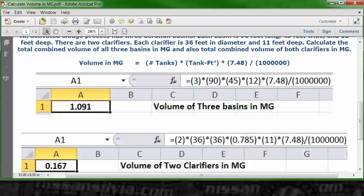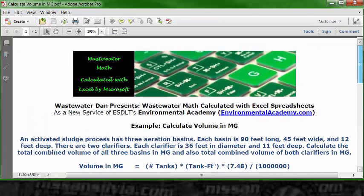And your answer will be 0.167 MG. So the volume of the two clarifiers in MG is 0.167. So those are the answers for both questions.